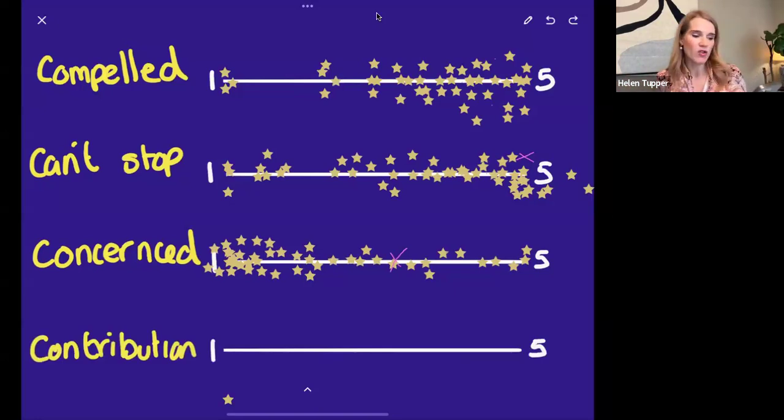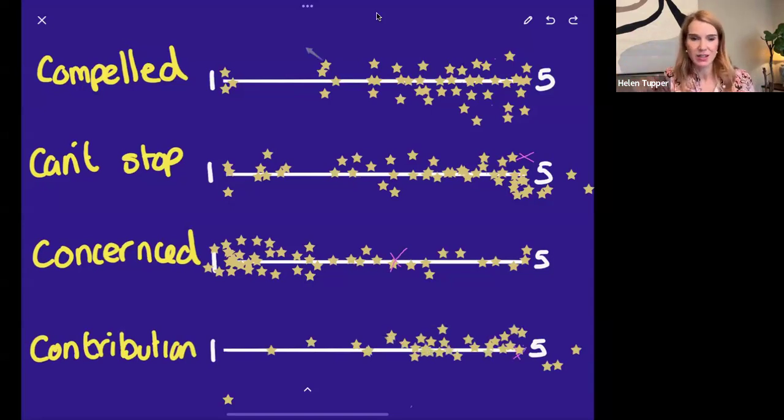Statement number four is about contribution: I tend to work beyond my job's requirements. Five, like I always do more than needs to be done. One, no, that is my job, I do it and then I stop.